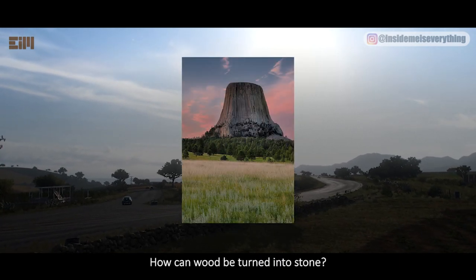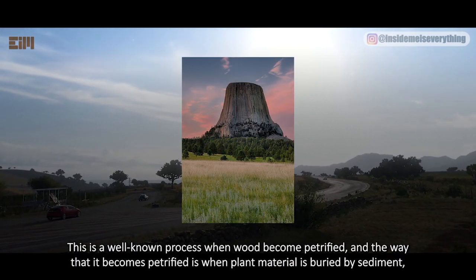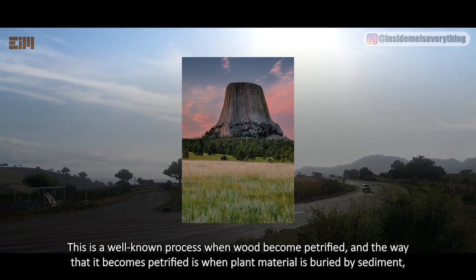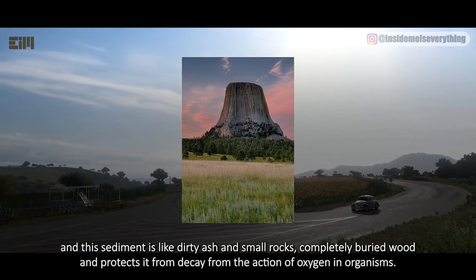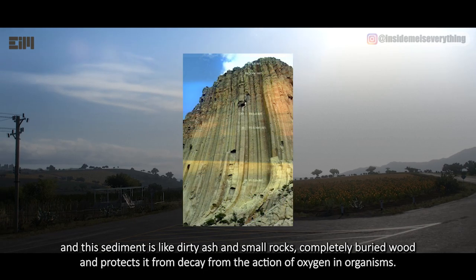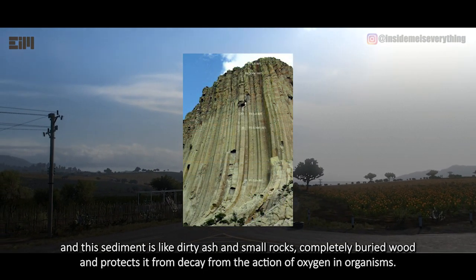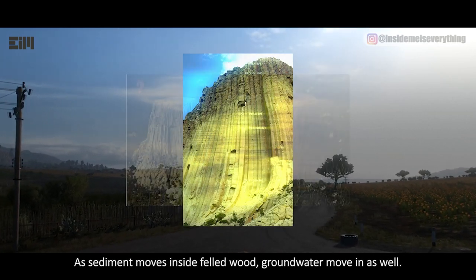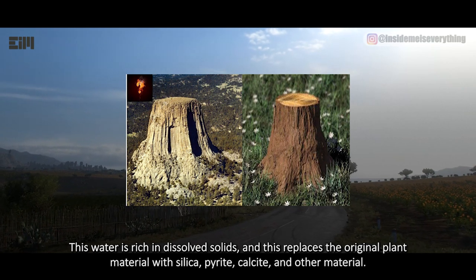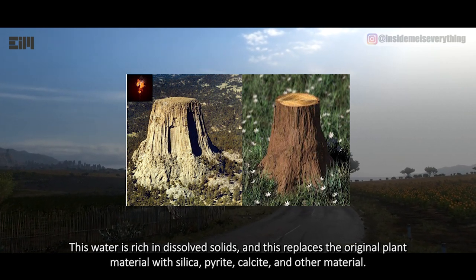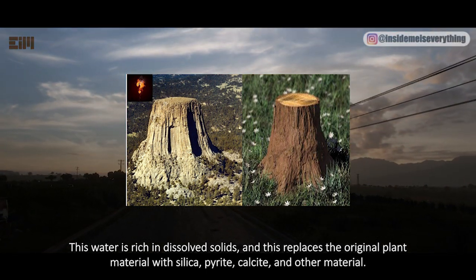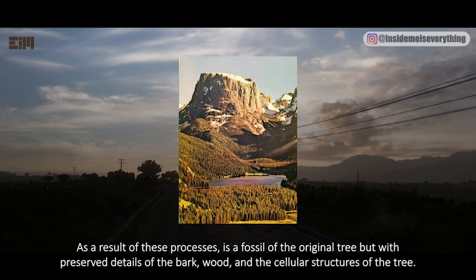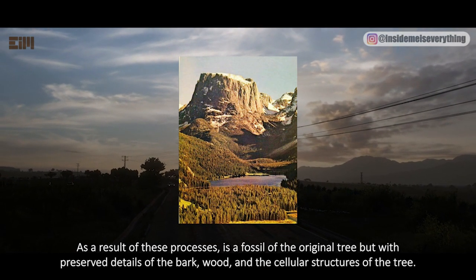How can wood be turned into stone? This is a well-known process called petrification. Wood becomes petrified when plant material is buried by sediment — like dirty ash and smaller rocks — which completely buries the wood and protects it from decay, from oxygen, and from organisms. As sediment moves inside felled wood, groundwater moves in as well. This water is rich in dissolved solids, replacing the original plant material with silica, pyrite, calcite, and other minerals. The result is a fossil of the original tree, with preserved details of the bark, wood, and cellular structures.